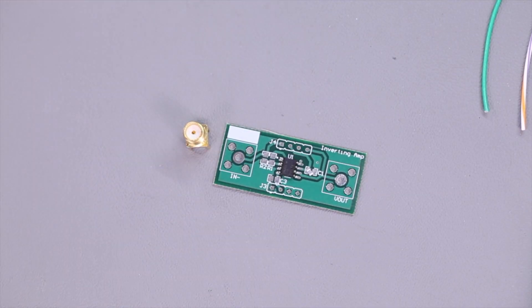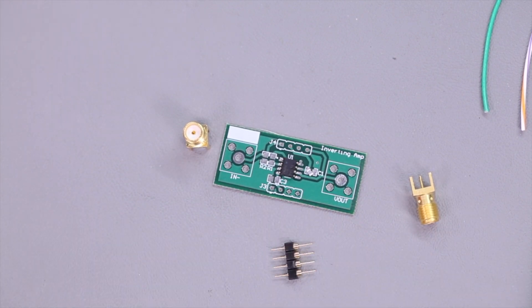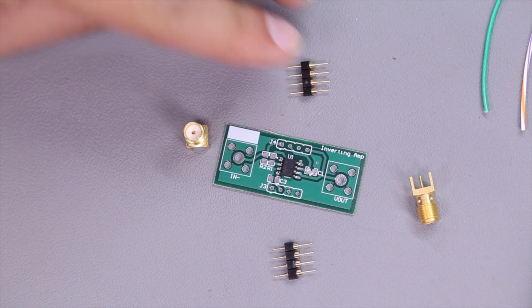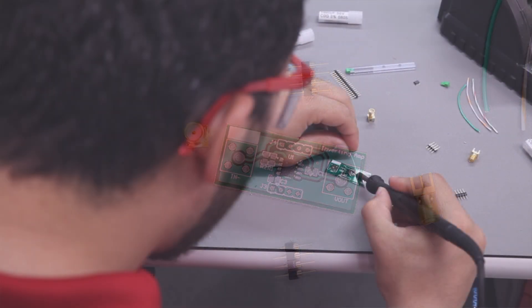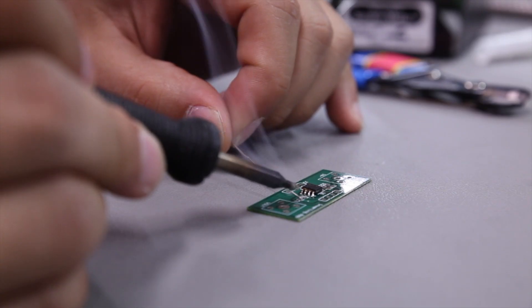It's time to solder your components down on the pre-tinned pads and populate it with the connector version of your choice. For your convenience, we designed the input-output connection slots to fit vertical SMA, horizontal SMA, wires, or through-hole test point connections.